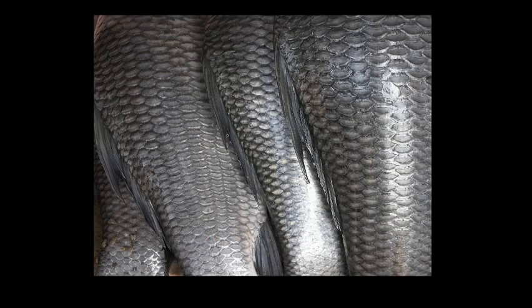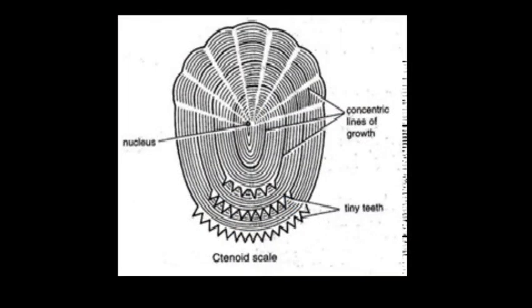This picture shows the arrangement of cycloid scales over the body of fishes. The last type of scales are ctenoid scales. These are very much similar in outline to the cycloid scales. The only difference is that they bear teeth-like processes on their outline.